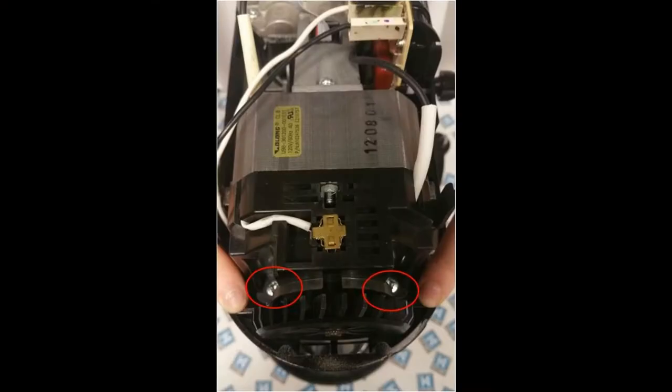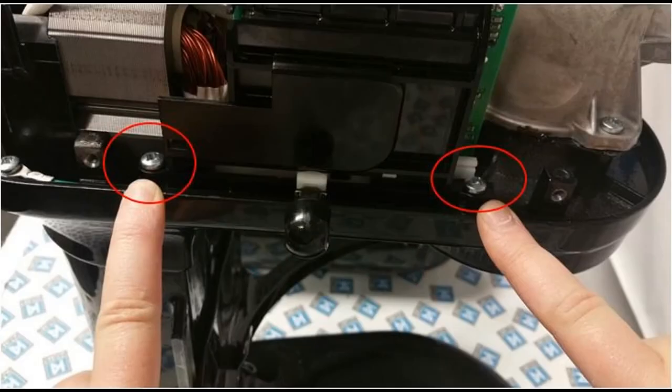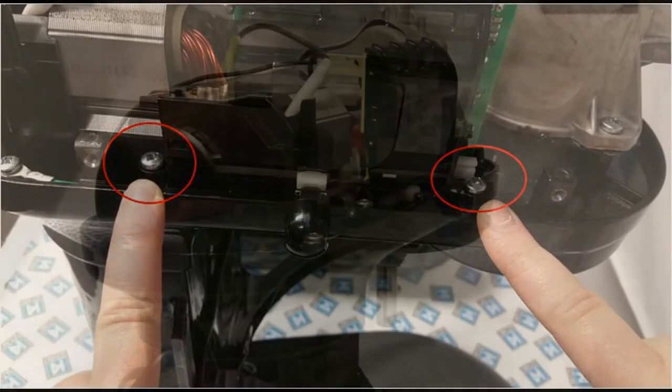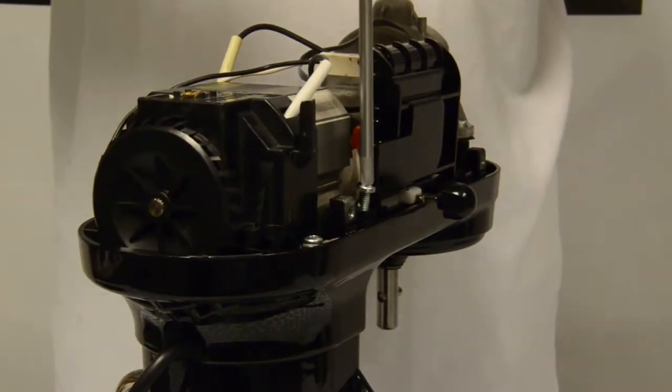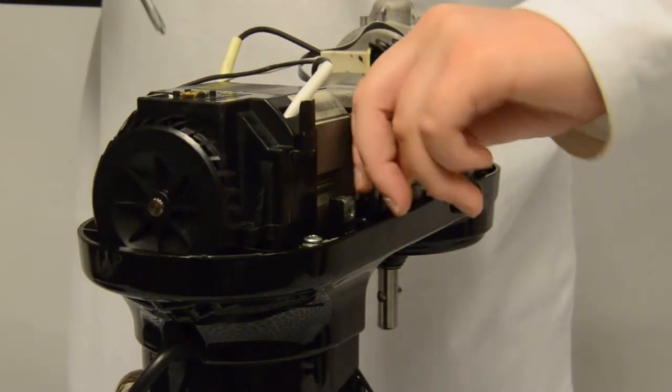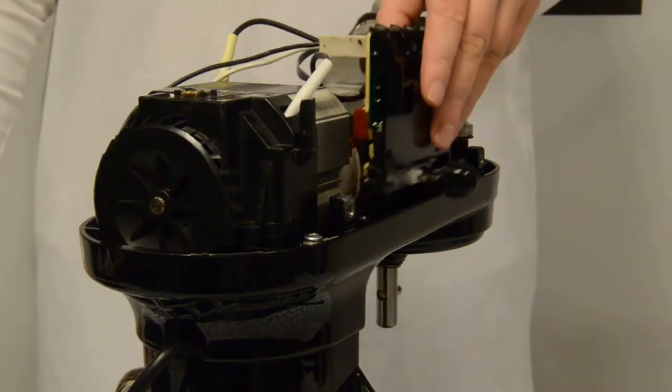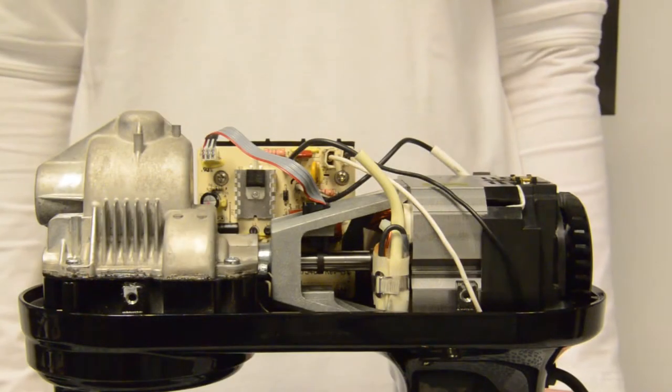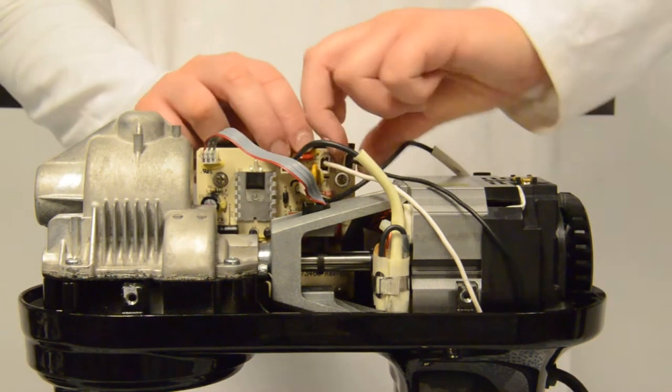Now remove the two screws on the motor and the two screws on either side of the control board. The control board will now lift off the mixer. We can remove the connectors that attach to the power cable and the two connectors attached to the motor.